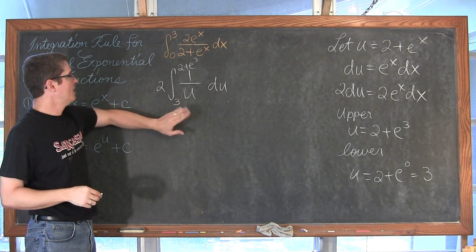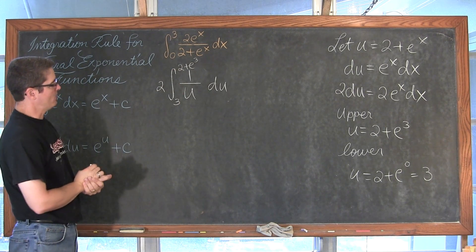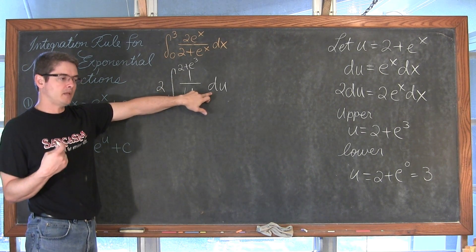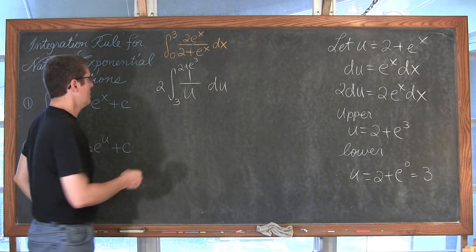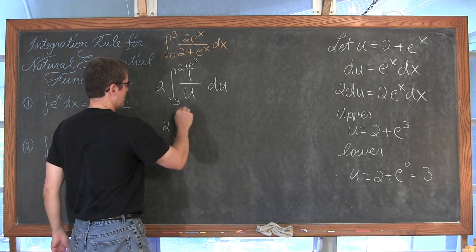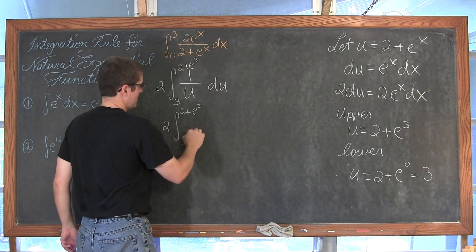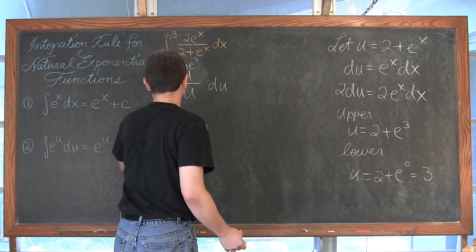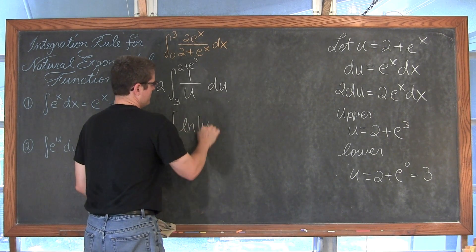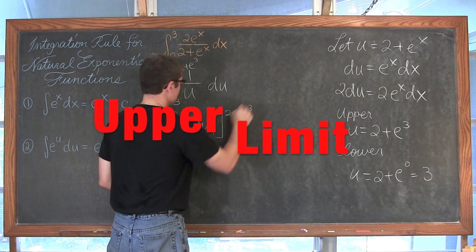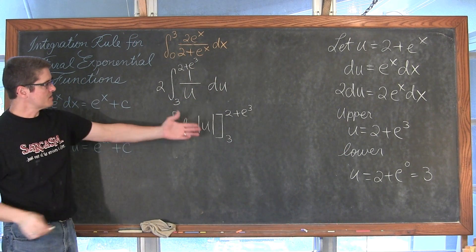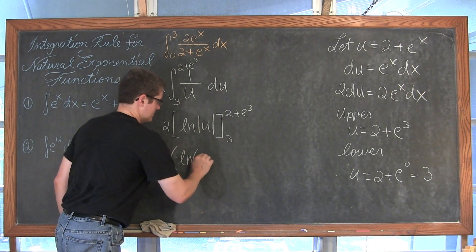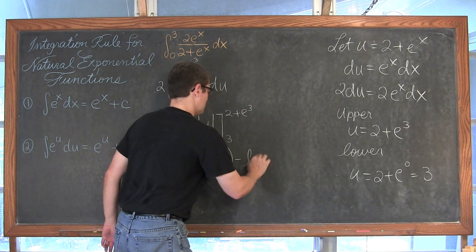So I am doing the definite integral of 1 over u du from 3 to 2 plus e to the third power. The integral of 1 over u du is the natural log of the absolute value of u. So we have 2 times the natural log of u, evaluated from 3 to 2 plus e to the third.